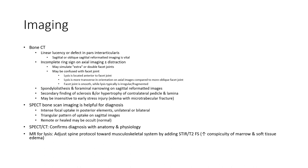On imaging, X-ray findings include linear lucency or defects in the pars interarticularis. CT shows an incomplete ring sign on axial imaging, with or without instruction. Spondylolisthesis with foraminal narrowing can be seen on sagittal reformatted images. Secondary findings include sclerosis and/or hypertrophy of the contralateral pedicle and lamina. MRI may be insensitive to early stress injury.